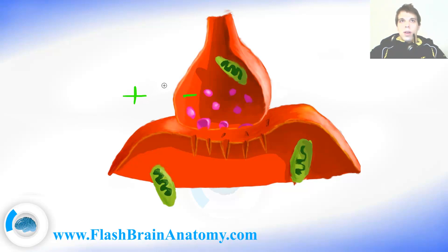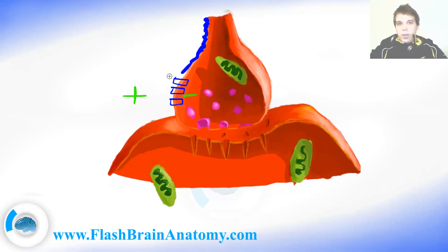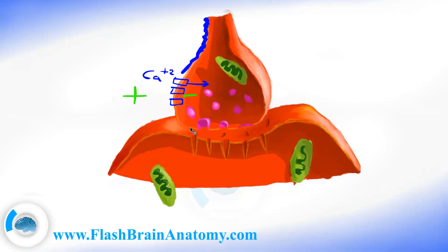The action potential, which I did not explain in detail because that's not an anatomy subject — it's more physiology — travels through the cell. As it travels through the axon, it depolarizes it. When it reaches the axon terminal, it depolarizes it, and that allows positively charged ions from outside the cell to diffuse inside. The calcium ions then trigger diffusion of vesicles with the membrane, and that way the neurotransmitter is released inside the synaptic cleft.